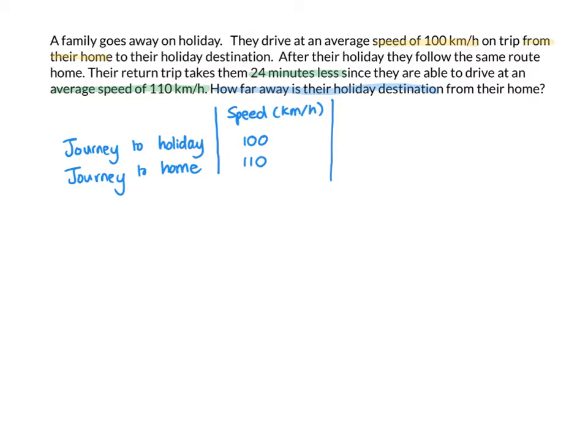Now, the distance. The distance on the way there and on the way back will be exactly the same. Also, the question asks me, how far away is their holiday destination? So, let's make my distance X. And for both of them, they'll be X because the distance will be equal to the holiday and back from the holiday.